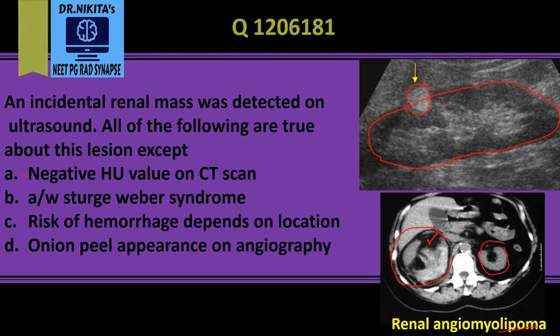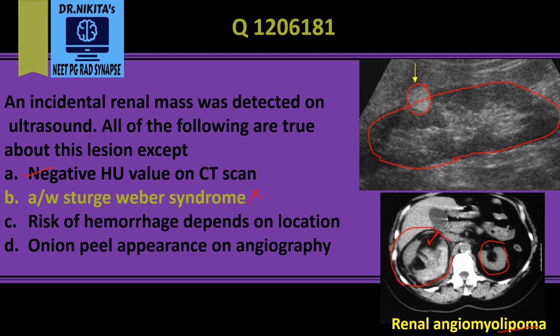Angiomyolipoma will have a negative HU value on CT scan — this is a correct statement. It is associated with Sturge-Weber is incorrect; it is actually associated with tuberous sclerosis, and in some cases neurofibromatosis and von Hippel-Lindau syndrome, but most commonly tuberous sclerosis.